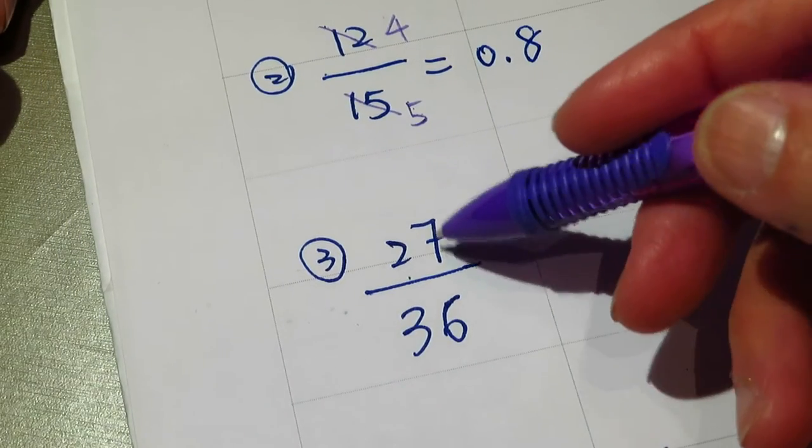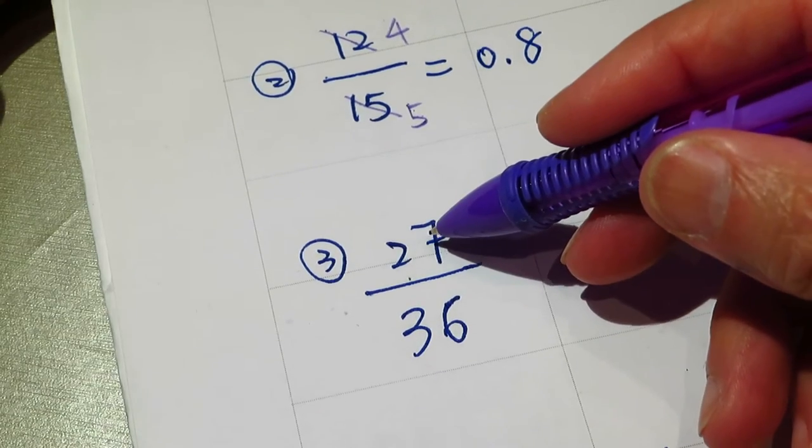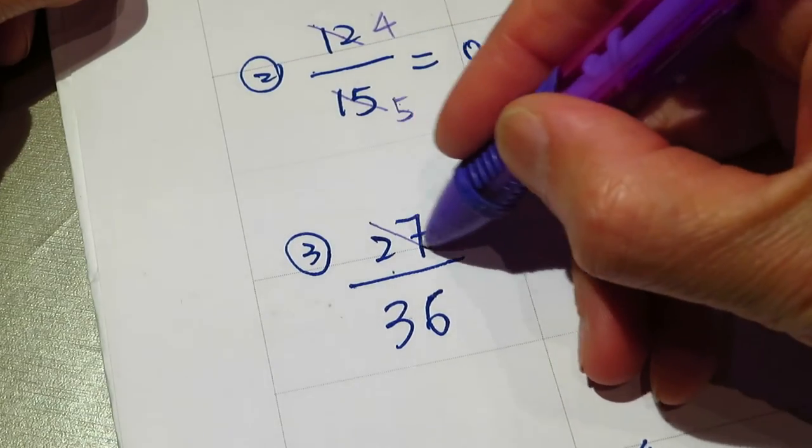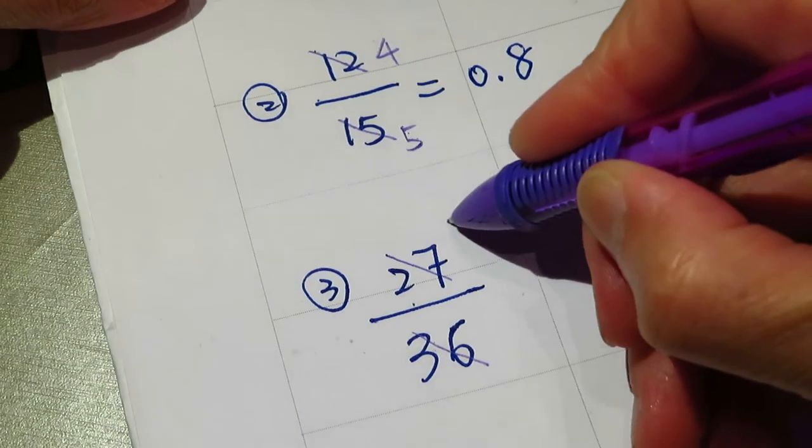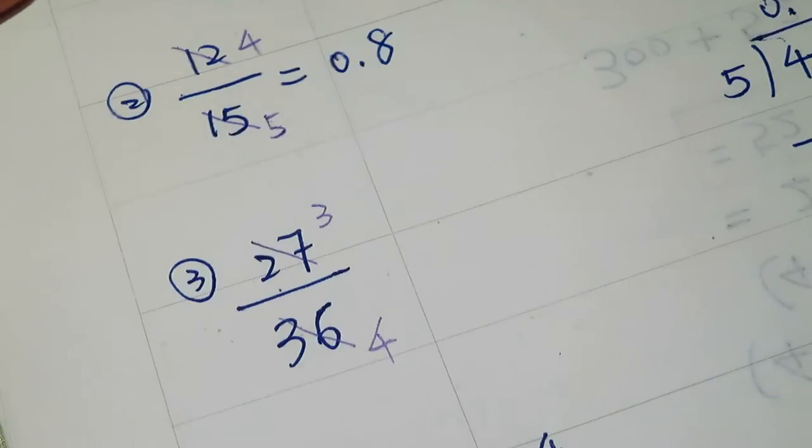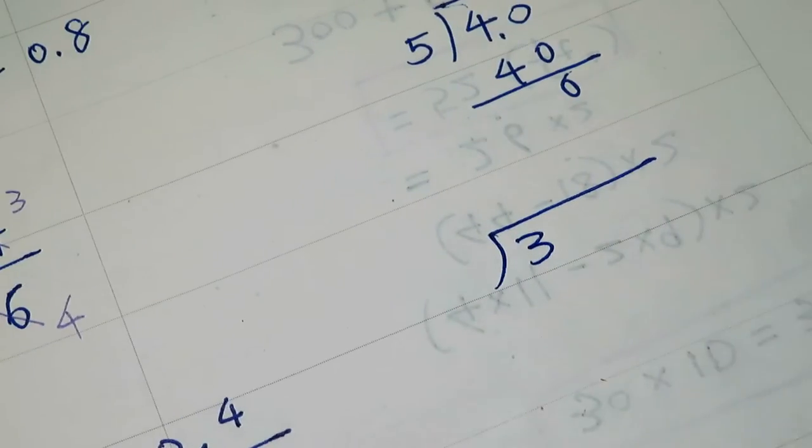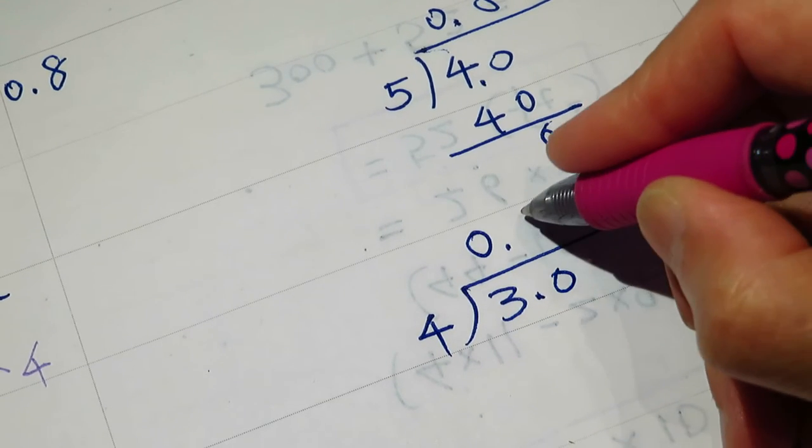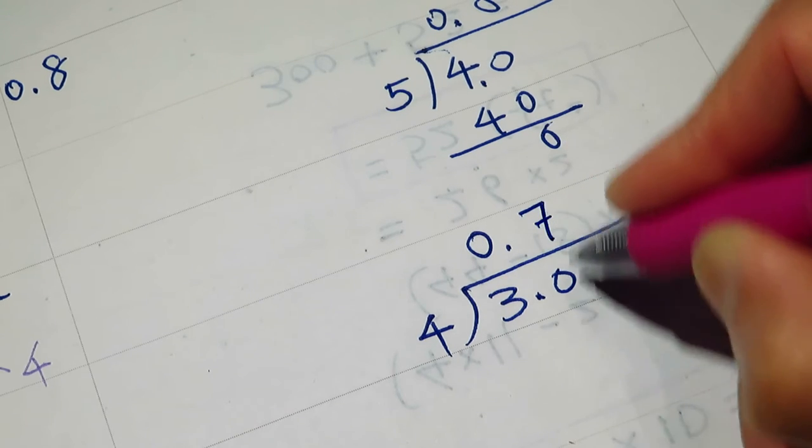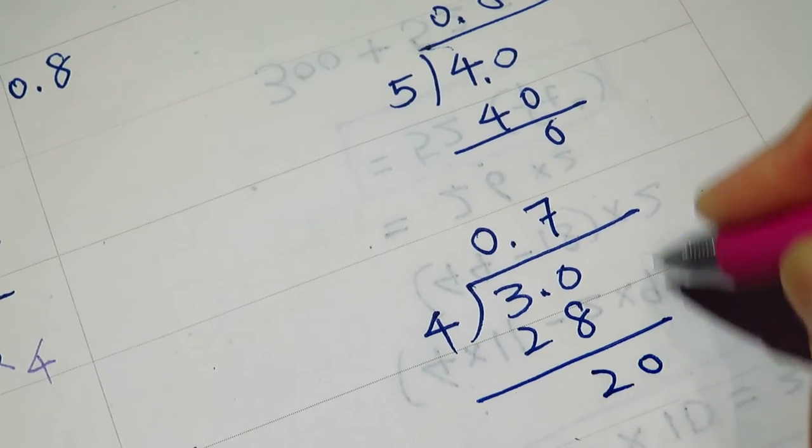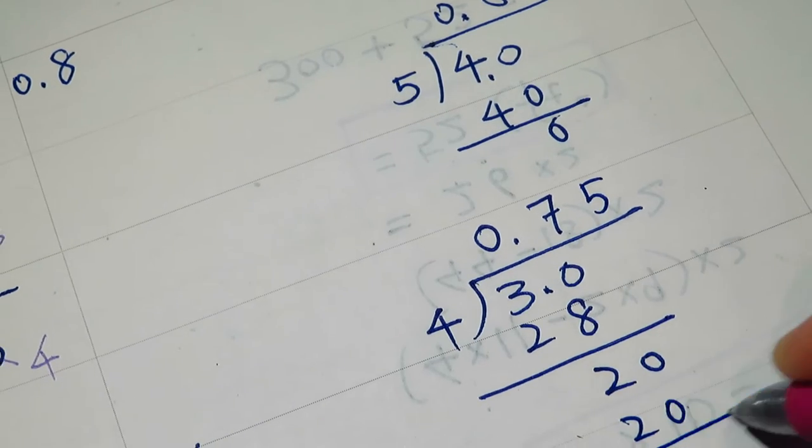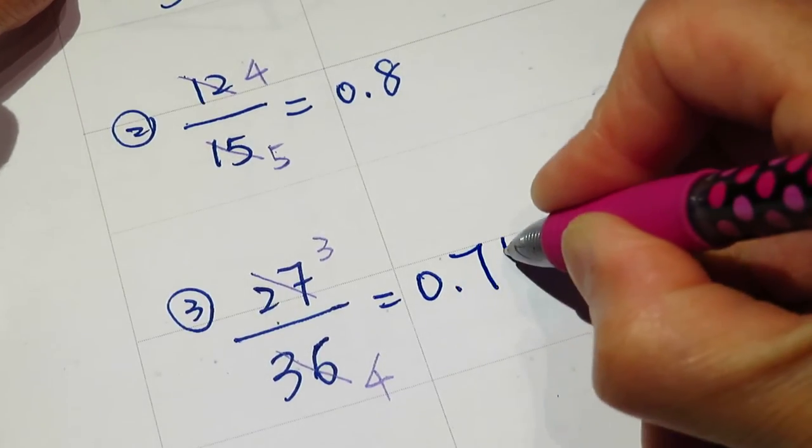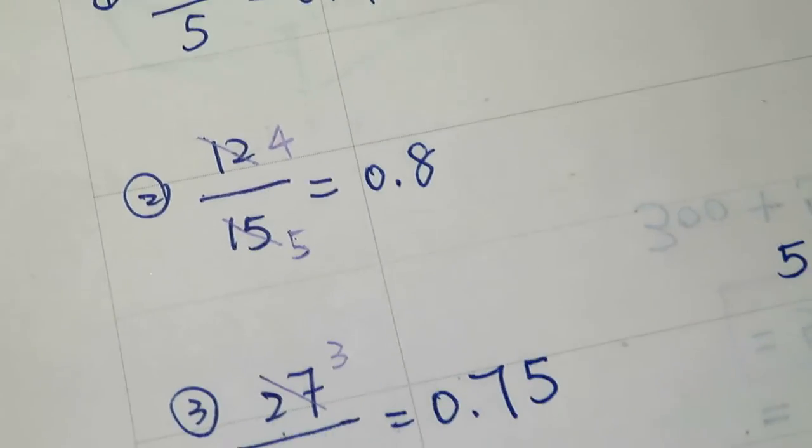This one, 2 plus 7 is 9, 3 plus 6 is 9. It's a multiple of 9, so we divide it by 9. 3 divided by 4, 0 point. So 3 divided by 4, the result is 0.75, right.